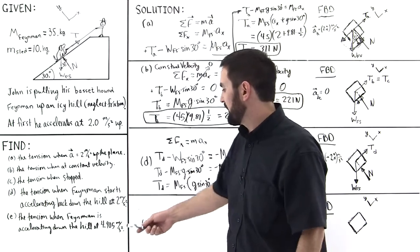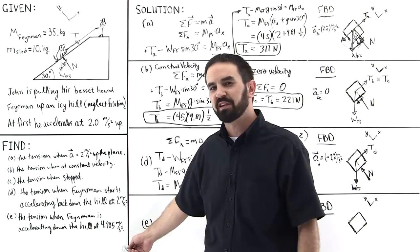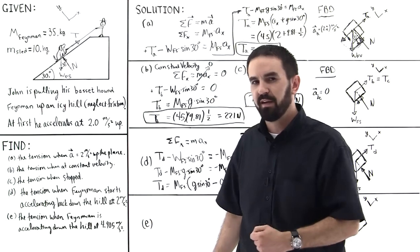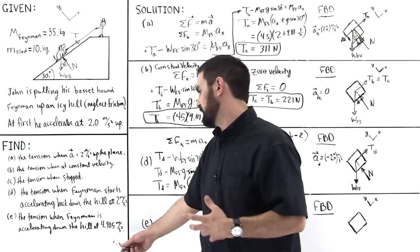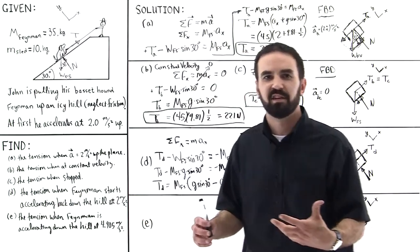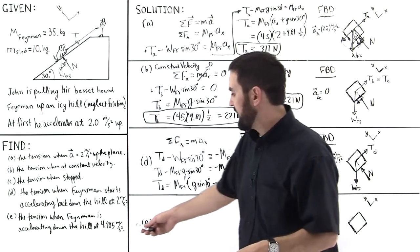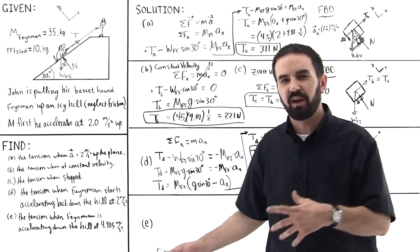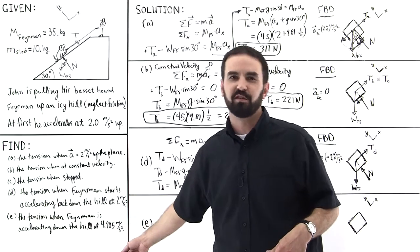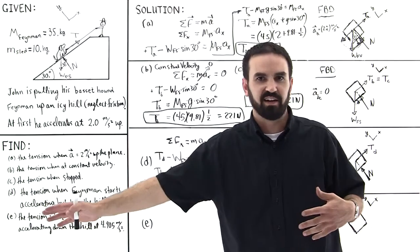So Feynman is now accelerating at 4.905 meters per second squared, so that would be the given. And they'll say, due to this acceleration, what is his, you know, what's the tension exerted? So that could be a test question.